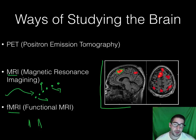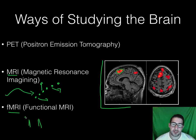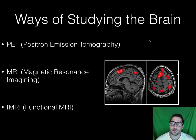These are the most important for this class to know: fMRI, MRI, PET scan, CT scan, and EEG. If you know those and what they do, you're going to be all right. Thank you.